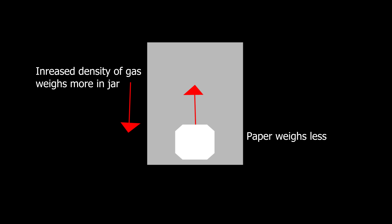And for the paper example, it actually increased the pressure in the bottle. The increased pressure in the bottle actually weighs more than something at regular pressure. So in that case the air inside the bottle weighed more and the paper weighed less, but overall the whole system weighed the same.